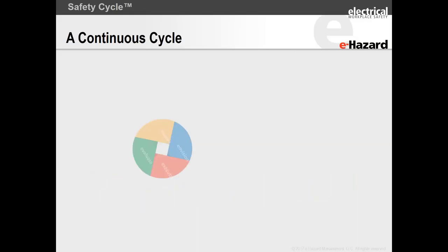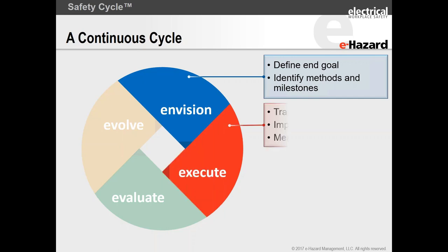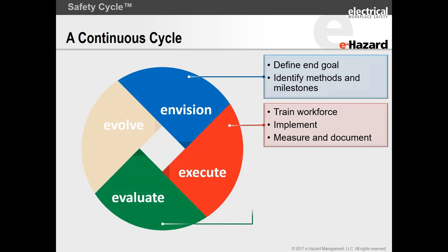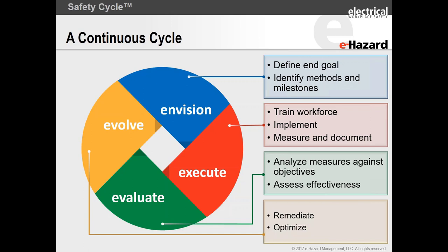For implementation strategies, we use a continual cycle based on the plan-do-check-act cycle. Define an end goal, identify the methods and milestones. Execute — train the workforce, implement, measure, and document. In the evaluation stage, analyze measures against objectives and assess effectiveness. Then evolve — it's the spirit of continual improvement, which is part of safety management systems. In NFPA 70E 2018, the Electrical Safety Program is in Article 110.1, Risk Assessment in 110.1 Part H, Training in 110.2, plus Investigations, Audits, Maintenance in Chapter 2.